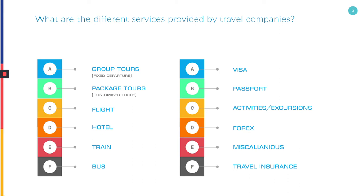Train: this service includes only train booking. Bus: similar to train service, this covers only bus booking. Visa: this service provides only visa assistance for international travel.